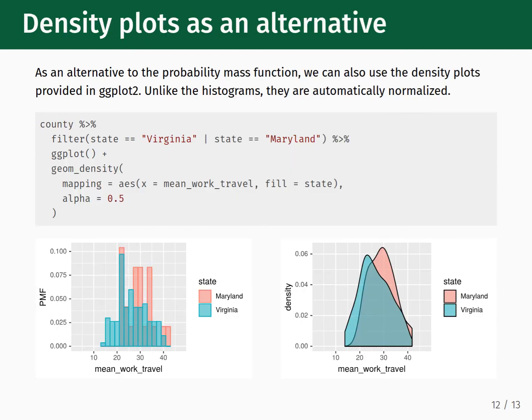Finally, it is worth mentioning that there is an alternative to the probability mass function that you can use, namely density plots. Unlike histograms, they are automatically normalized, and the default parameters are sensible in many circumstances, helping you avoid the bin width selection problem. Just replace geom_histogram with geom_density, and you'll have the density plot, as shown in the displayed code block. The bottom of the slide compares the probability mass function for Maryland and Virginia on the left to the density plots on the right. Both capture the same trends and features, but the automatic smoothing in the density plots makes it easier to read and interpret what is going on in the data distributions.